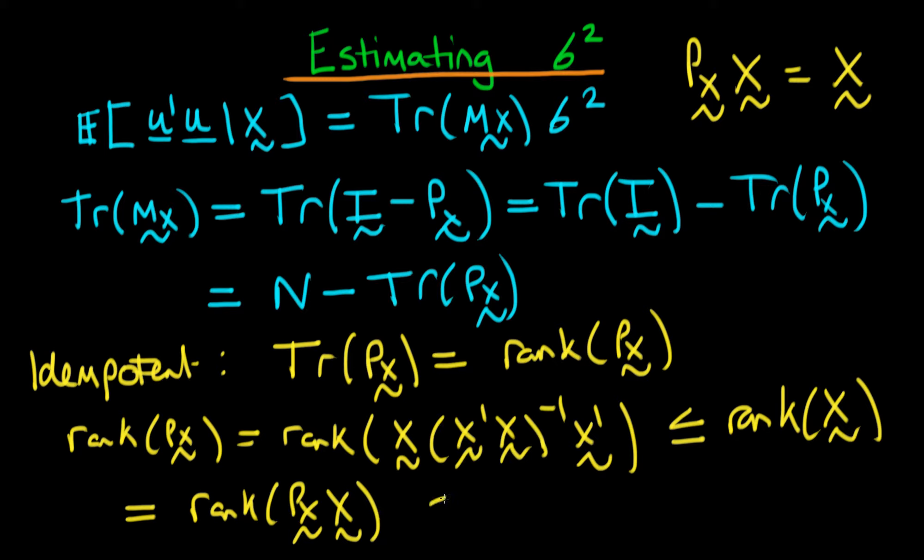Finally, this has to have a rank which is less than or equal to the rank of px, because px is n by n whereas x is n by p. The only way this chain can make sense is if all of the inequalities are just equalities.